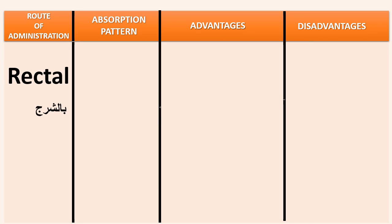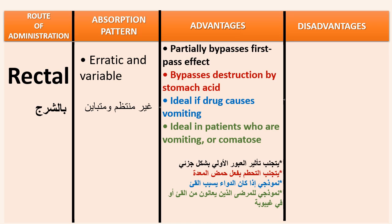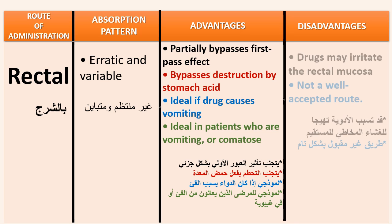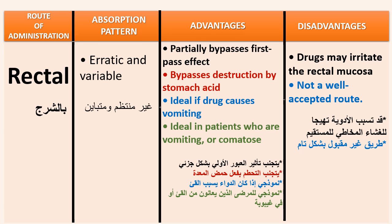Rectal route: absorption is erratic and variable, it partially bypasses the first-pass effect, and bypasses destruction by stomach acid. It is ideal if the drug causes vomiting and ideal in patients who are vomiting or comatose. Its disadvantages are that drugs may irritate the rectal mucosa, and it is not a well-accepted route.